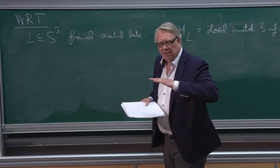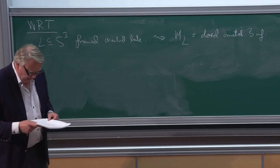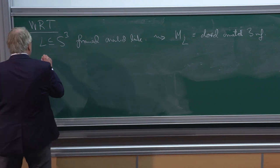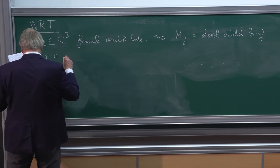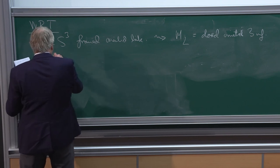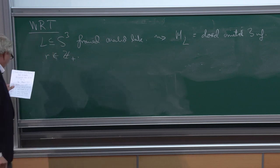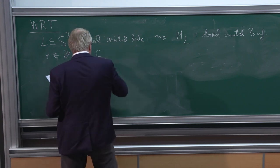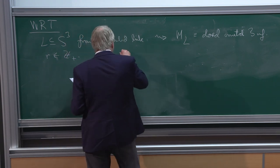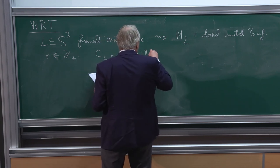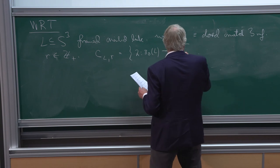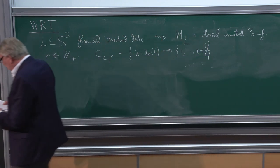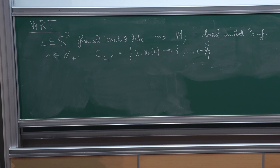Framed means that it has a trivialization of its normal bundle, so it's like a little banded link. Now I'm going to pick R, which is going to be a positive integer. And then I'm going to look at the following labeling: I introduce notation C(L,R), which is simply all the maps from the components of L into the label set. I should note that in Maxim's talk at the very end, capital N is actually little r here.